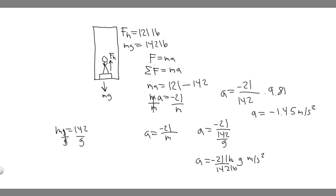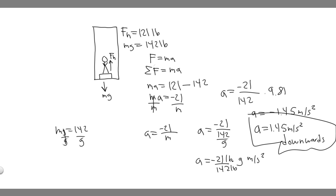The result is minus 1.45 meters per second squared. What they're asking for is the magnitude and direction. The magnitude is just the absolute value, so 1.45 meters per second squared, and then the direction, since it's negative, means downwards. So the acceleration is 1.45 meters per second squared, downwards.